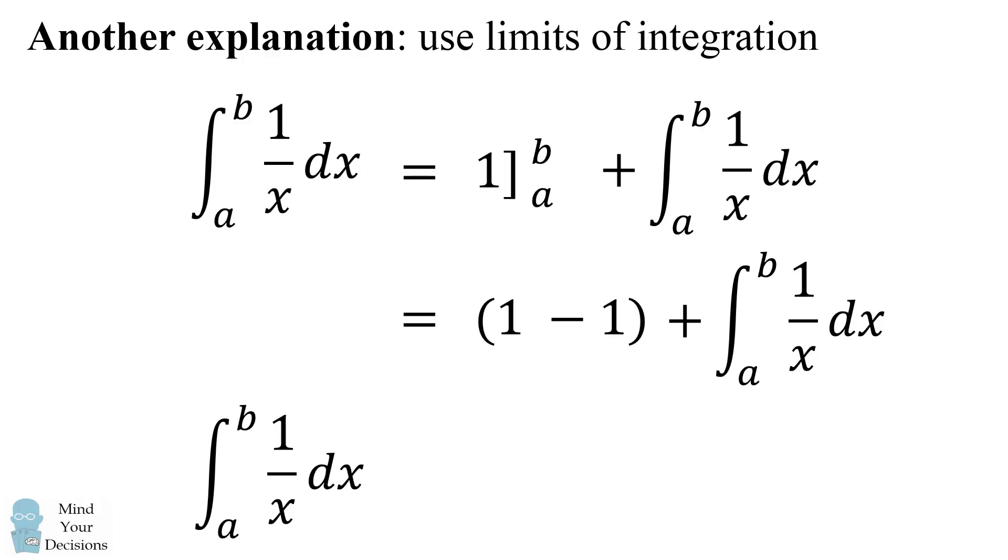So when we simplify this, we get the definite integral from a to b of 1 over x dx will be equal to the definite integral of 1 over x dx from a to b. So we have no contradiction here, and it's also not very interesting. But you can avoid the mistake of canceling indefinite integrals and getting absurd results like 0 equal 1 by considering limits of integration.